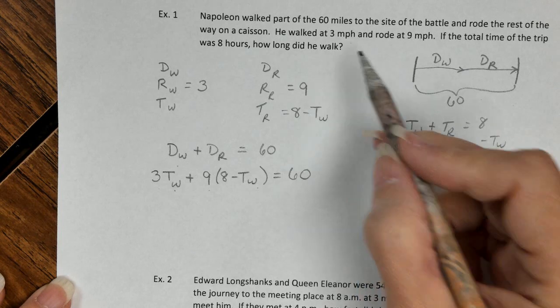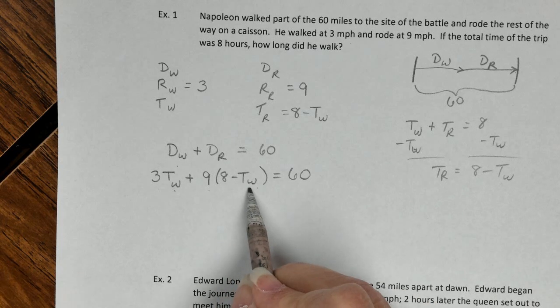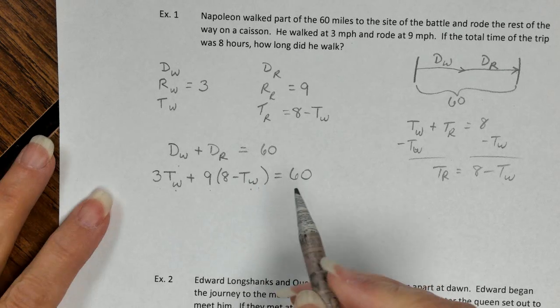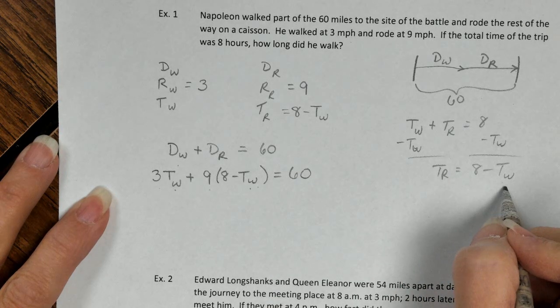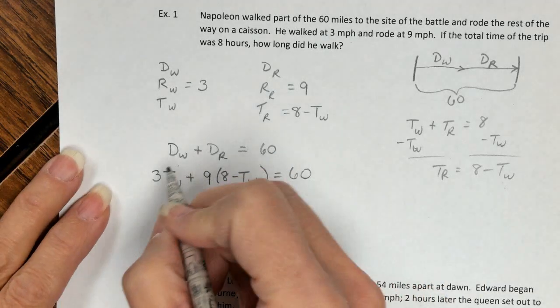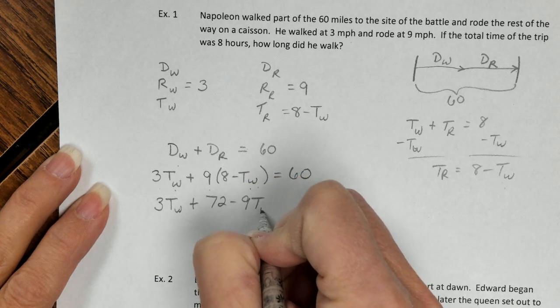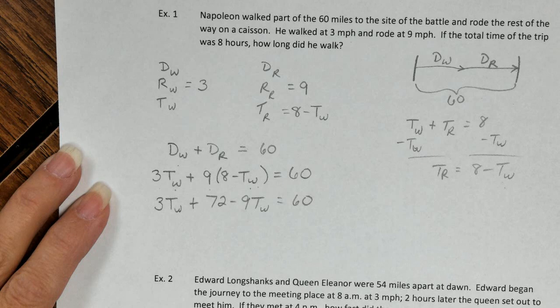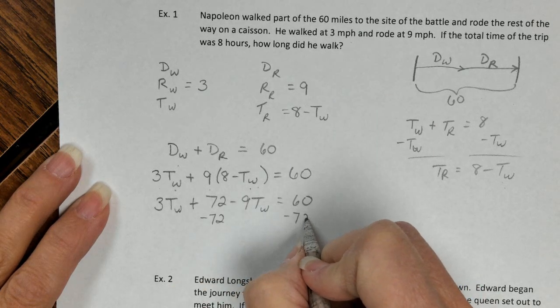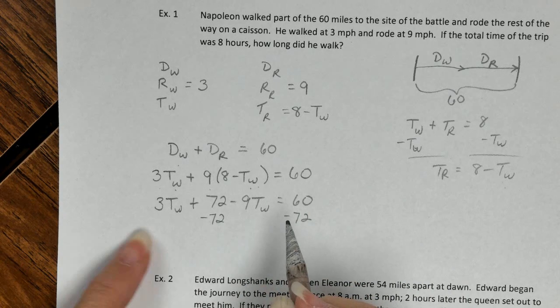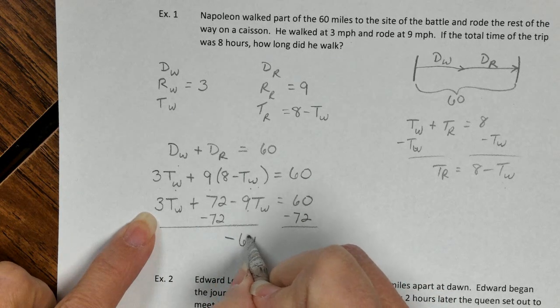They want to know how long he walked. That is actually why I chose to do it this way. So this is time walking, that'll be the answer. If we had subtracted the other way around, gotten TW by itself, you would have had to do one final little step at the end. So let's distribute. And then I'm going to combine my steps just a little bit. I'm subtracting 72 from both sides. What's remaining are like terms, and I'll add those. 3 minus 9 is negative 6TW.